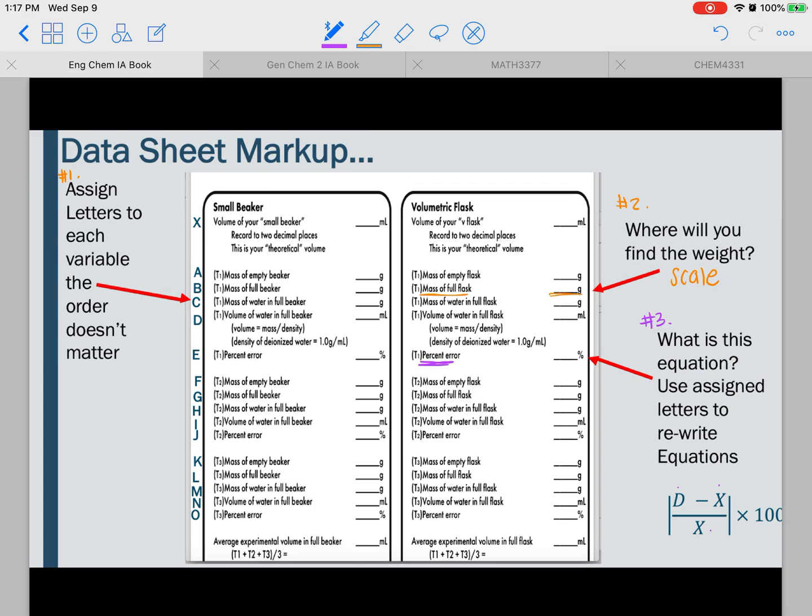But what I want you to do is I want you to take that formula and we said it was experimental minus theoretical over theoretical. So we're going to look on the data sheet and be like, okay, what is our theoretical? And it would be this right here, D. So we're just going to go ahead and plug in variable D, and then we're going to do minus X. And X is up here. So we're just going to do D minus X times 100, and that is going to be our percent error. But you're going to put the variables in. That way, when you're in lab, you don't have to think about where are these numbers. You already know. You know that it's D minus X. And you can be over here and be like, okay, this is D, here's the D value, here's X, here's my X value. That way you can just plug it in. It'll be super easy.